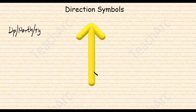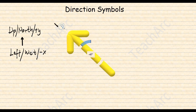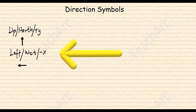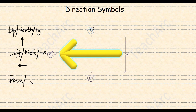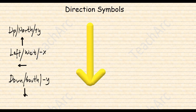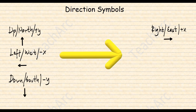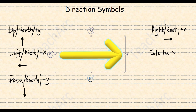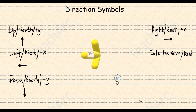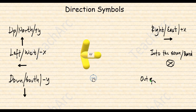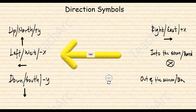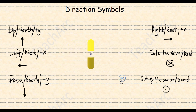We use an arrow pointing upward for north, positive y, or up directions. A left arrow for west, negative x, or to the left direction. An arrow pointing downward for south, negative y, or downward direction. For right, east, or along the positive x-axis, we have an arrow pointing to the right. For three dimensions, we have an X mark inside a circle to indicate a direction pointing into the board, into the paper, or into the screen — the X mark signifies the tail of an arrow. A dot inside a circle indicates the direction is out of the board or screen, representing the head of the arrow.